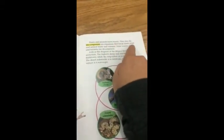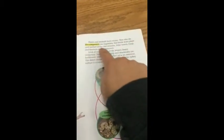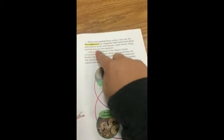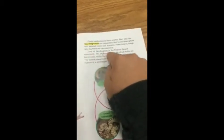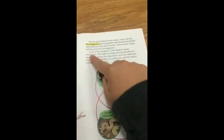Scavengers eat dead and decaying plants and animals. Plants and animals leave wastes. They also die. Decomposers are organisms that break down plant and animal waste and remains. Some insects, fungi, and bacteria are decomposers.